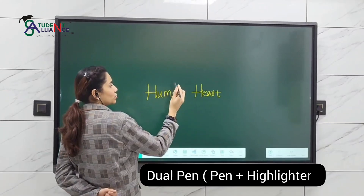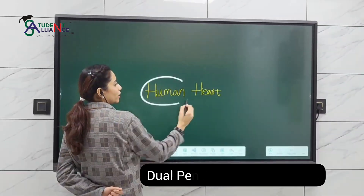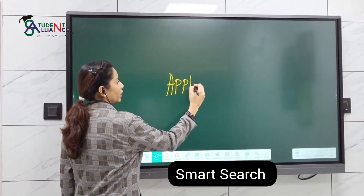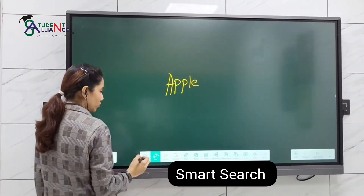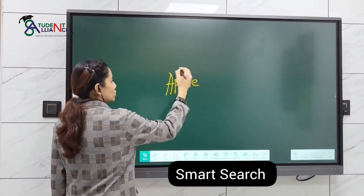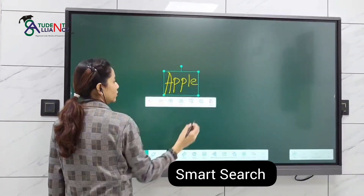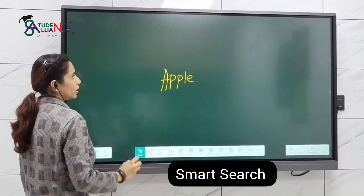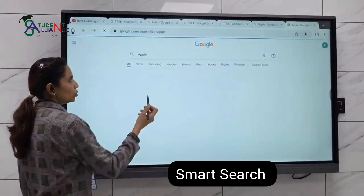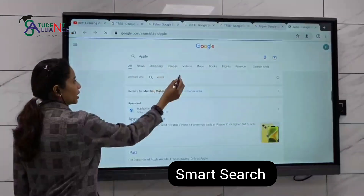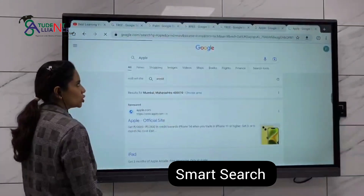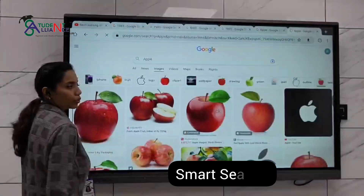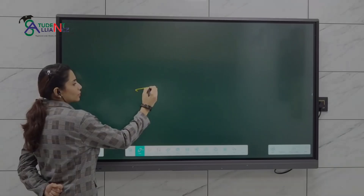There is a smart search option — anything you try to select and search on Google will be directly taken to the Google page for your needs, and you can use it from there.